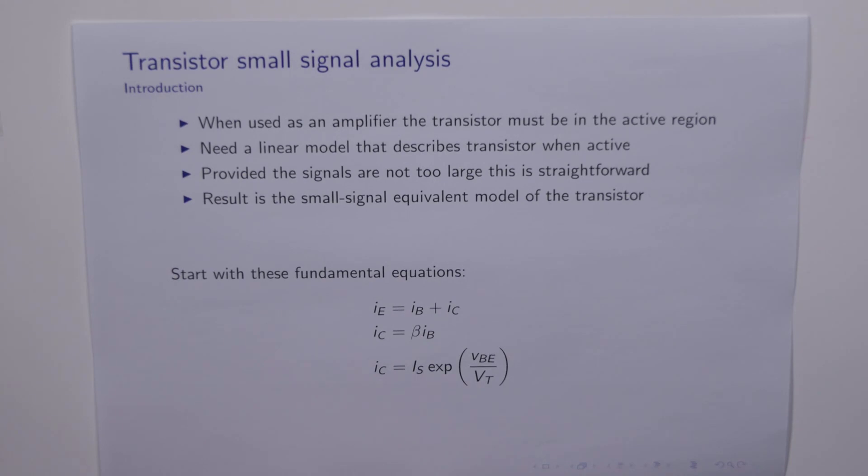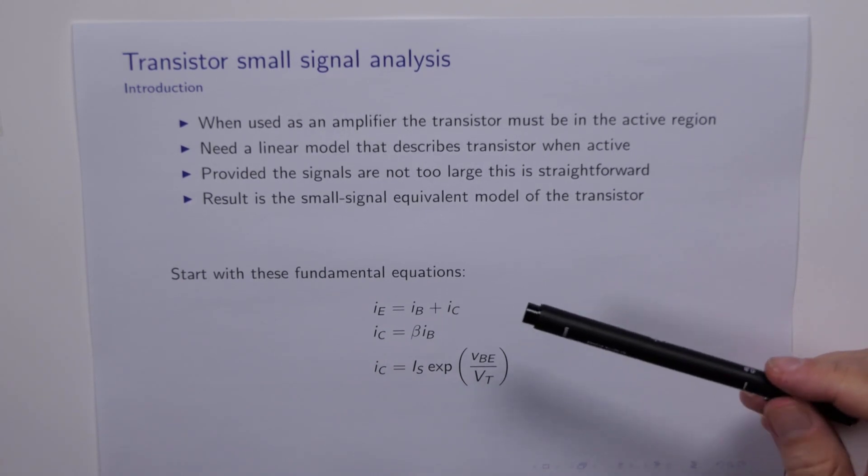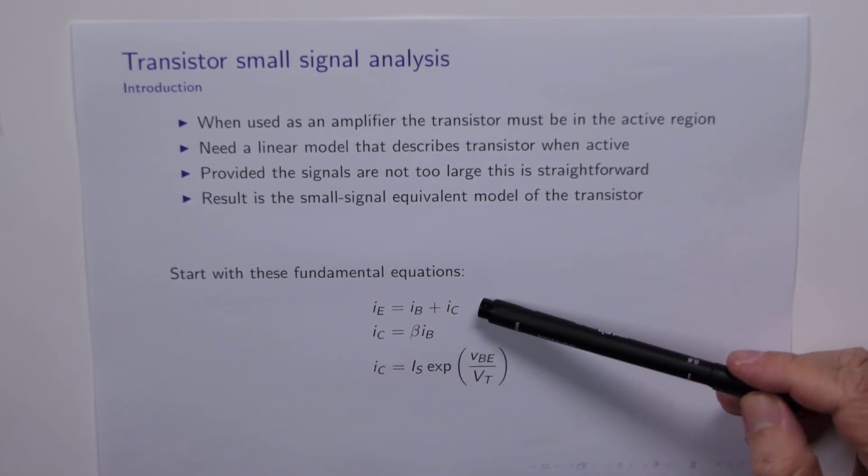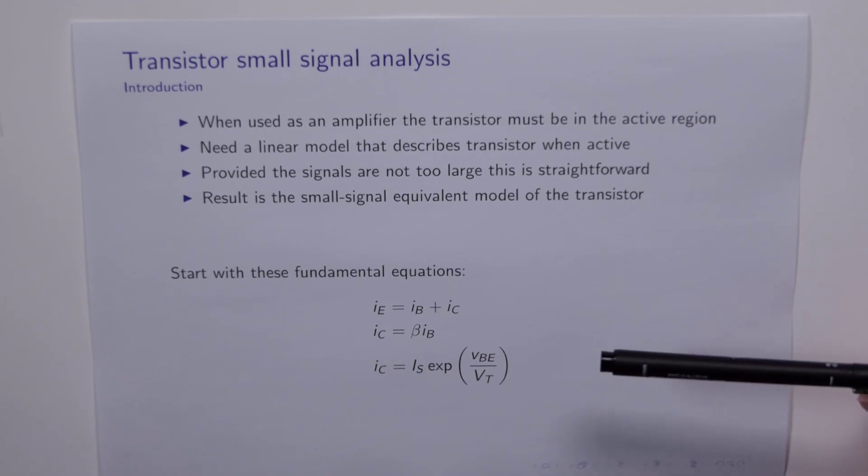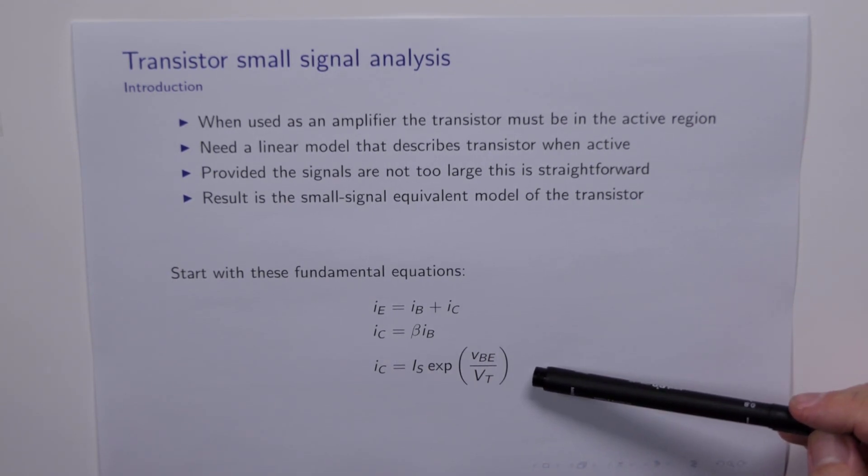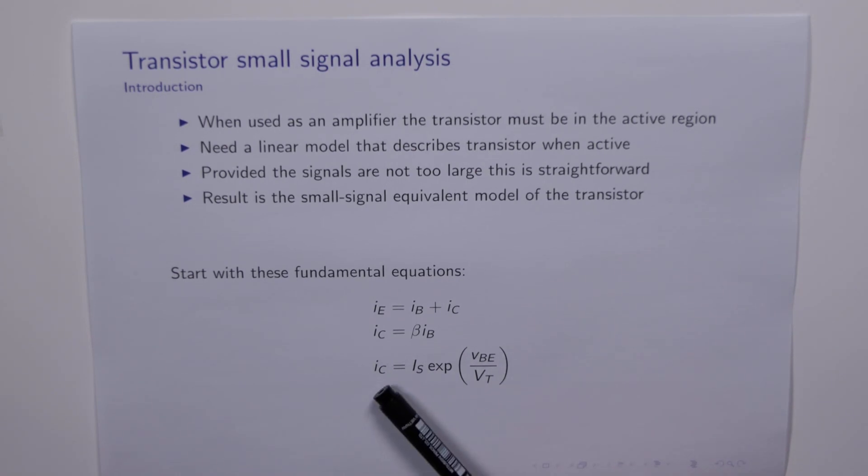At some point we'll understand what small signal means, but in the meantime we'll just forge ahead. So we just need to start with these equations. We've got the fundamental equation which we know is always true, and we've got the equation connecting the collector current and the base current in the active region.